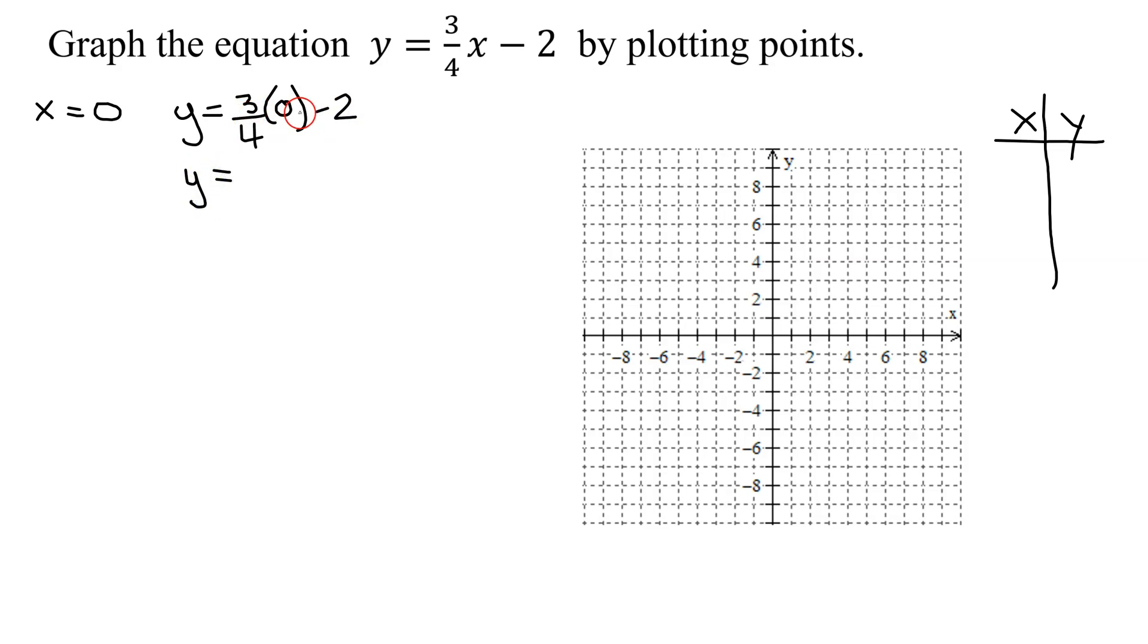Well, what is three-quarters of 0? 0, so 0 minus 2 is just negative 2. So my first point is the point (0, -2).